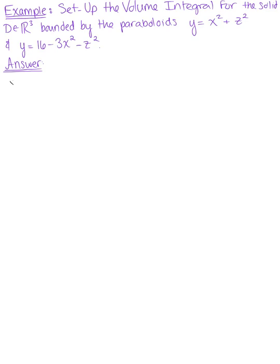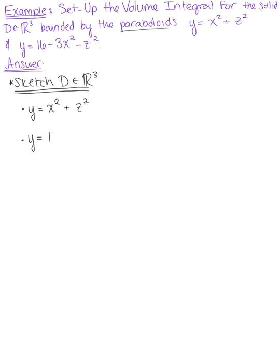The first thing we want to do is sketch this solid region D, our region of integration in R³. Let's think about the bounds that are given. We have two paraboloids: y equals x squared plus z squared, and y equals 16 minus 3x squared minus z squared.